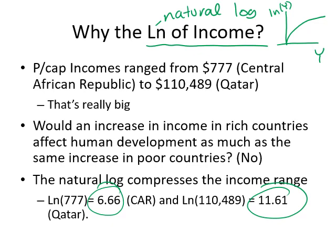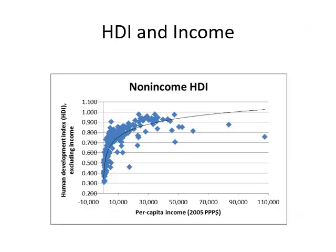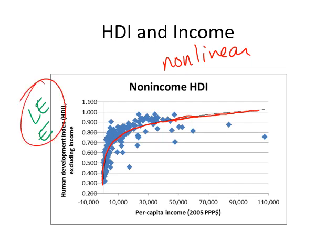Let me show what this looks like graphically. If we just put our per capita income normally and compare it to other parts of human development — so this is life expectancy and education — it's going to have this relationship. At first, when income goes up, those things go up a lot, and then income goes up and they barely go up, and eventually not much is happening at all. So it's going to be nonlinear. If we compare human development to per capita income, then it is nonlinear.